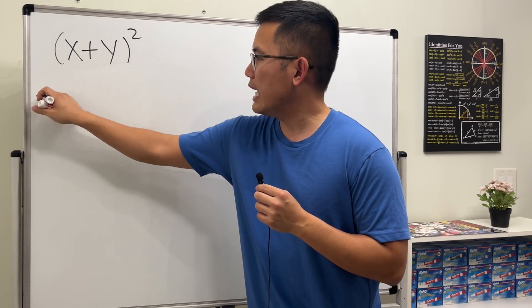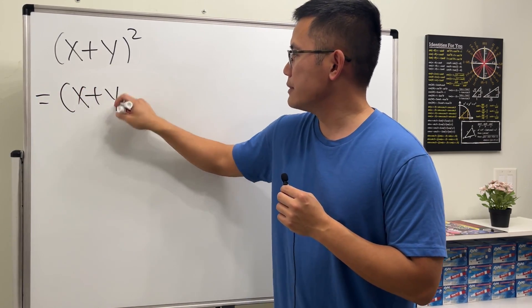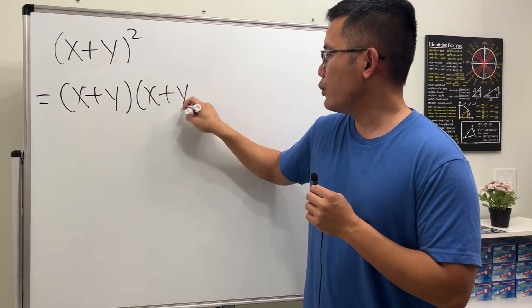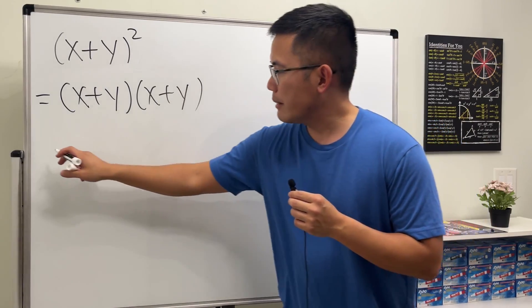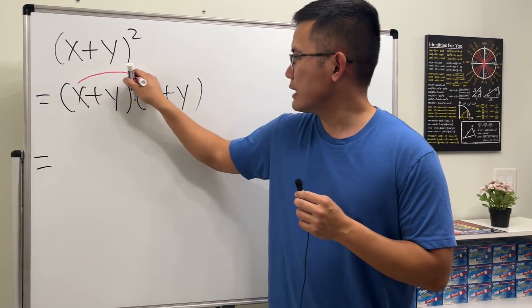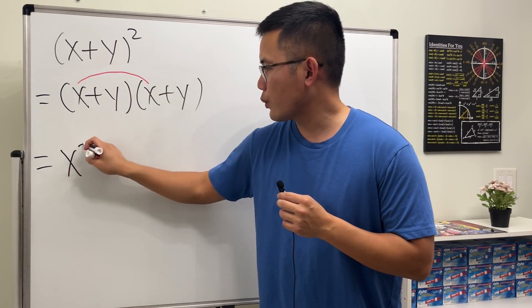So we have x plus y times x plus y, and then we are going to use the FOIL method. That means we are going to do the first times first: x times x is x square.